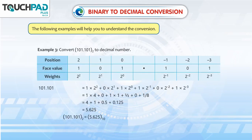Example 3: Convert 101.101 base 2 to a decimal number.